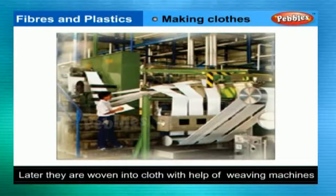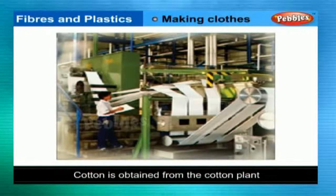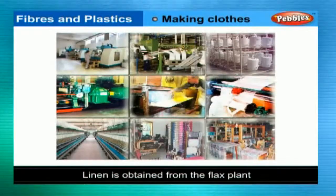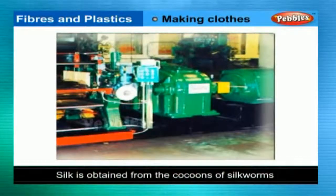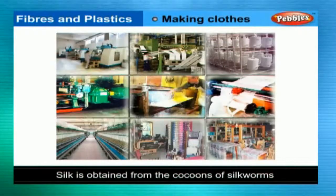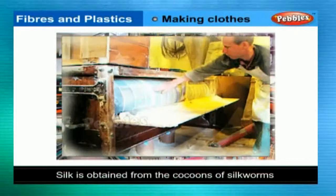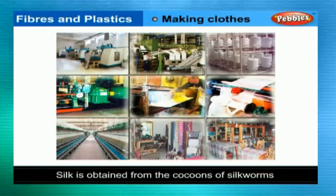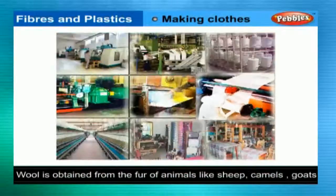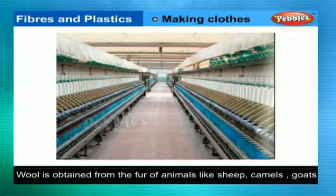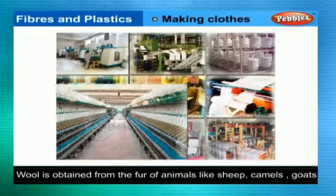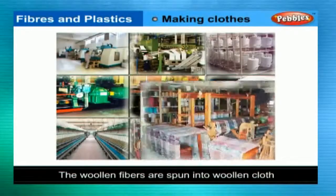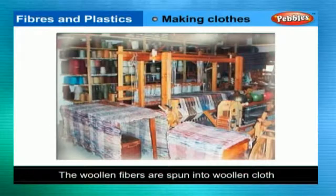Cotton is obtained from the cotton plant. Linen is obtained from the flax plant. Silk is obtained from the cocoons that silkworms spin, commonly found on mulberry trees. Wool is obtained from the fur of animals like sheep, camels, and goats, and the woolen fibres are spun into woolen cloth.